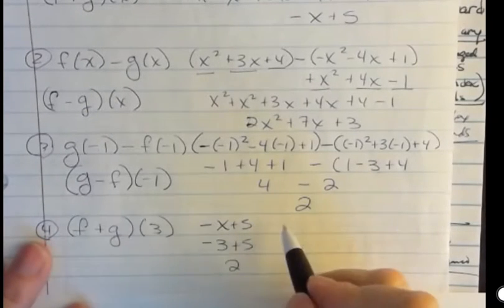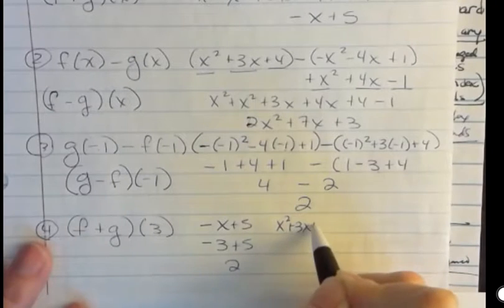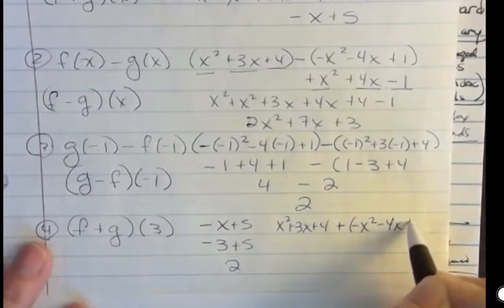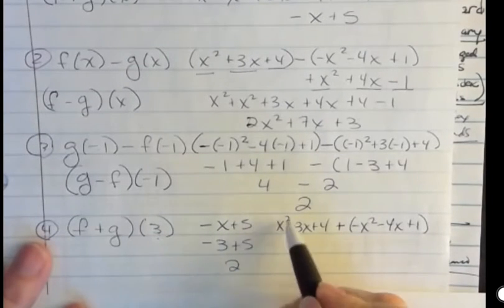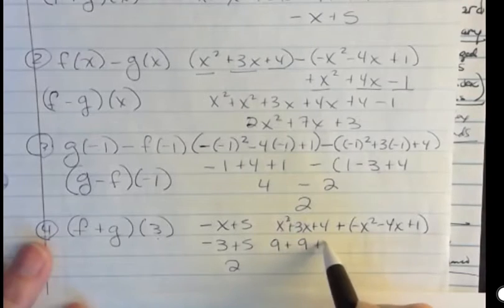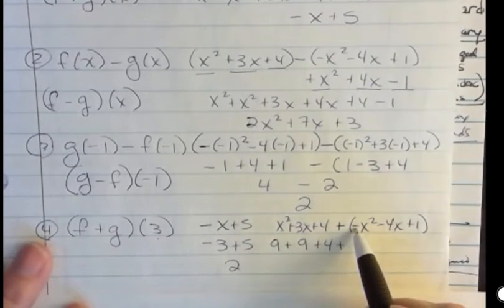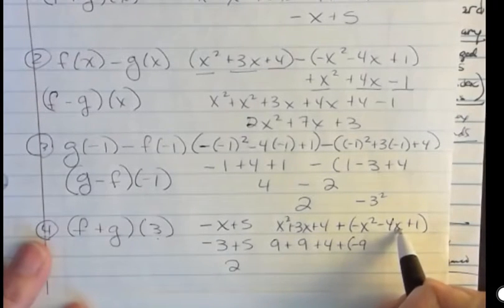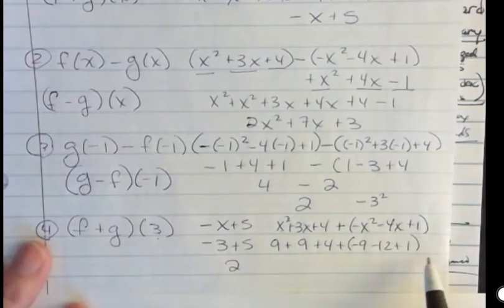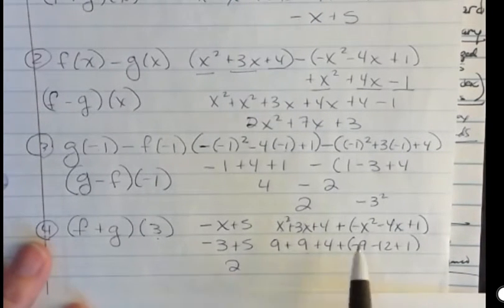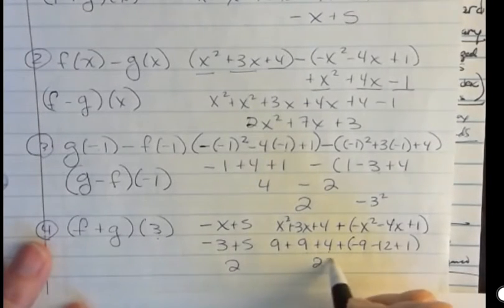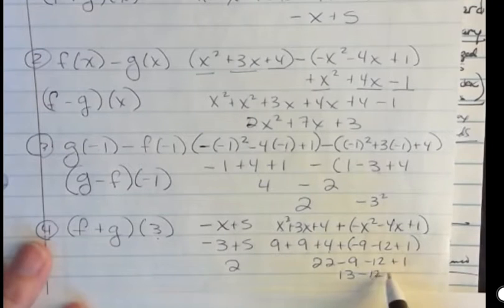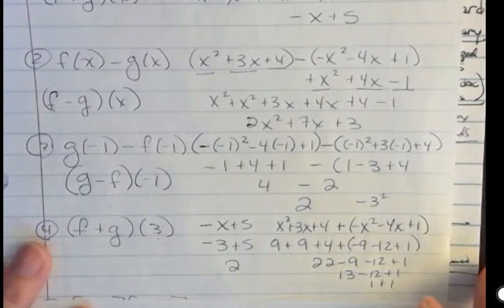But I could also take my f, which was x squared plus 3x plus 4, and my g, which was negative x squared minus 4x plus 1, and I could replace everything with 3. 3 squared is 9. 3 times 3 is 9. This one I want to be careful. I have a negative out front. So what I have is negative 3 squared. That's actually negative 9, right? Negative 4 times 3 is negative 12 plus 1. Now I could add all this together and see what I get. 9 plus 9 is 18 plus 4 is 22. Minus 9 minus 12 plus 1. 22 minus 9 is 13. Minus 12 plus 1. 13 minus 12 is 1. 1 plus 1 is, ah, it's 2.